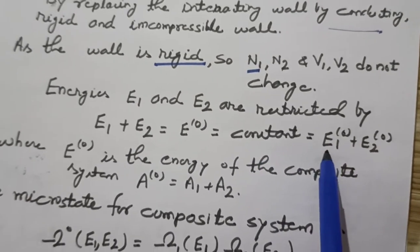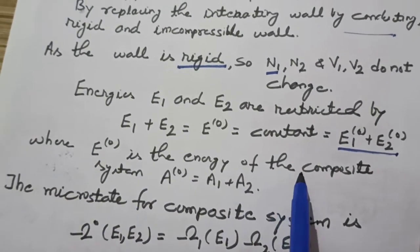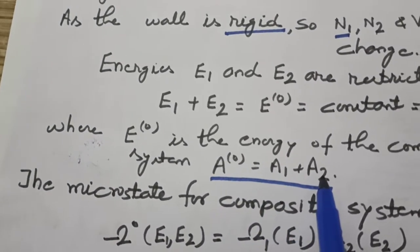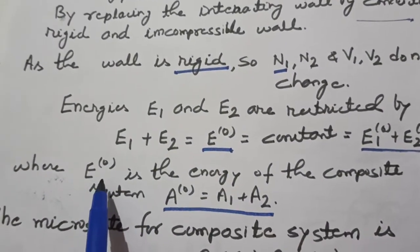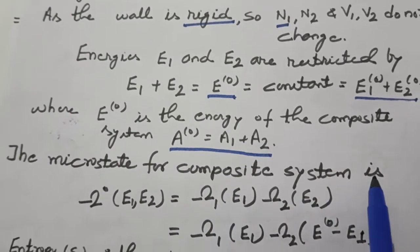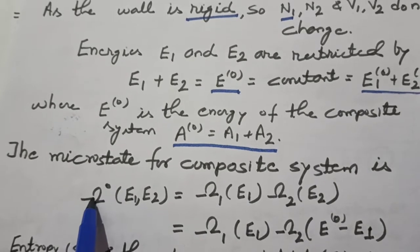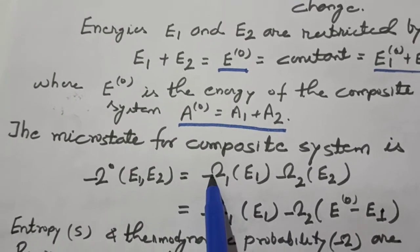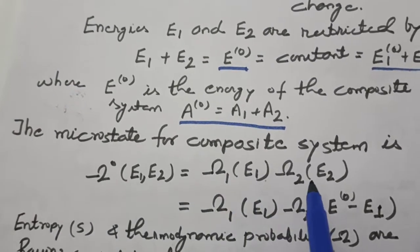E0 is the energy of the composite system A0, which equals A1 plus A2. The microstates for the composite system are given by omega0 as a function of E1 and E2. Since microstates are a multiplicative quantity — the probability for the composite system is multiplicative — we have omega0 equals omega1(E1) times omega2(E2), which equals omega1(E1) times omega2(E0 minus E1).